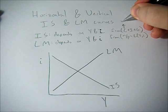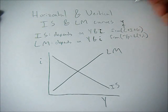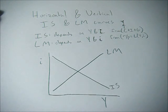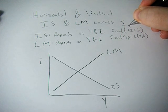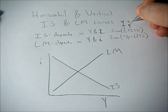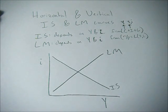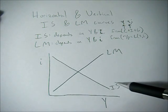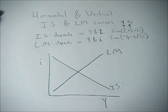Consumption is always going to depend on Y, the marginal propensity to consume and that sort of thing. But investment can depend on Y or little i or perhaps neither, and that's going to change the shape or the slope of our IS curve.